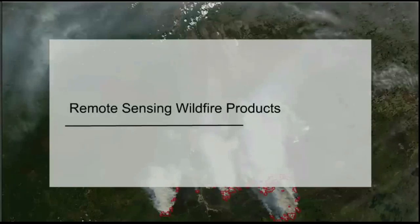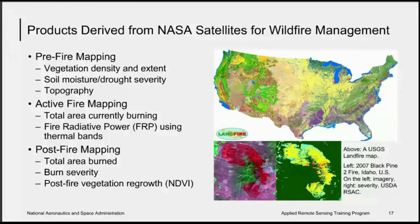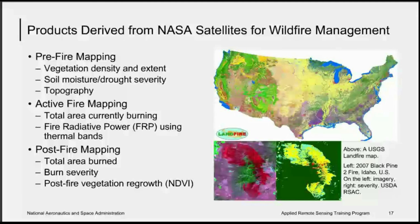Now we will discuss the remotely sensed products available for wildfire applications. NASA satellite data have multiple uses for assessing pre-fire conditions, for identifying active fire locations, and for post-fire mapping of burned areas. For pre-fire mapping, satellite imagery is used to assess vegetation density and health and drought severity prior to fire outbreaks. This information is used along with soil moisture, topography, and other environmental variables in fire models to determine fire behavior and to treat high-risk areas to reduce fire threat.